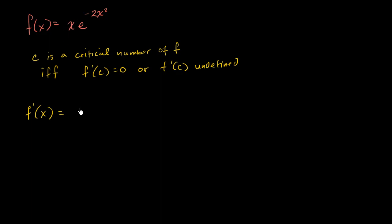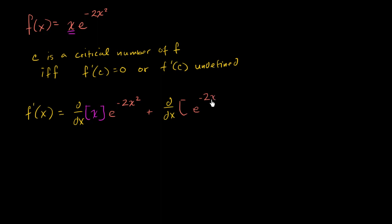f prime of x is going to be the derivative with respect to x of x, times e to the negative 2x squared, plus the derivative with respect to x of e to the negative 2x squared, times x. This is just the product rule: derivative of x times e to the negative 2x squared, plus the derivative of e to the negative 2x squared times x.